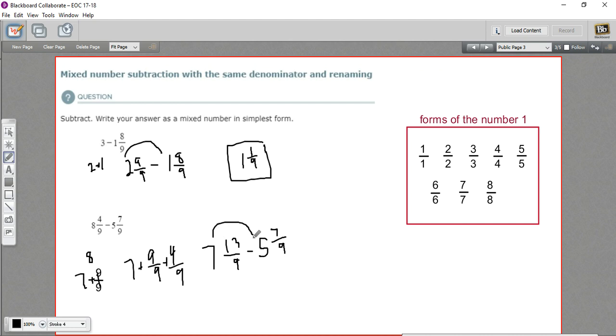Now I can do the subtraction of both parts because I have 7 minus 5, that's just 2, and 13 minus 7, which is 6/9. So that's a little strategy for doing mixed number subtraction.